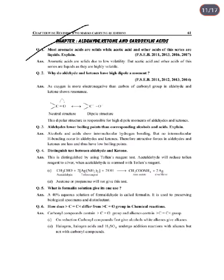Next chapter: Aldehydes, Ketones, and Carboxylic Acids. First question: Why are most aromatic acids solid while acetic acid and other acids of the aliphatic series are liquid? Aromatic acids are solid due to their low volatile nature, but acetic acid and other aliphatic acids are liquid because they are highly volatile in nature.